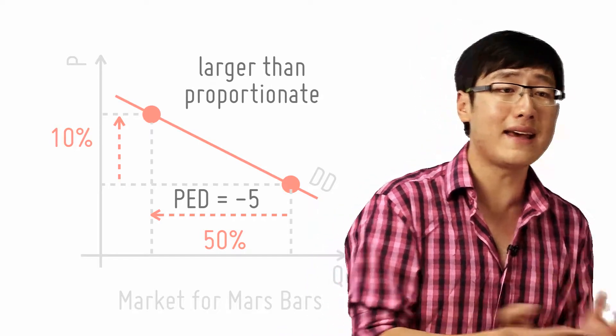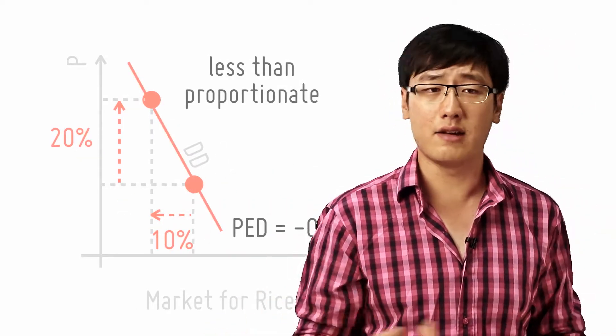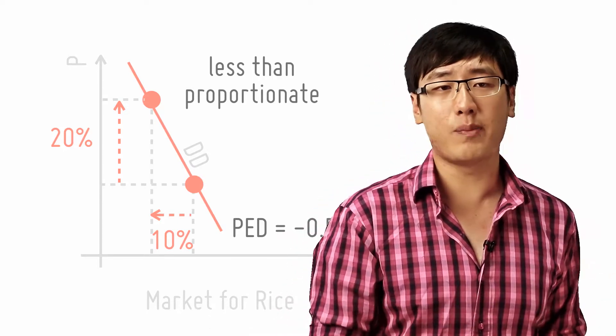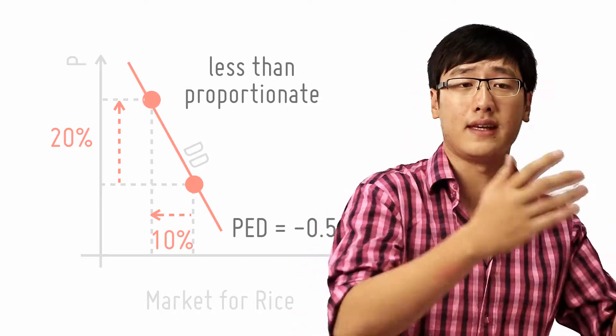However, when your PED is less than 1, this means that let's say your price increases by 40% and the resulting change in quantity demanded is around 20%. That's 0.5. So there will be a less than proportionate change in quantity demanded. This means that the demand is price inelastic.